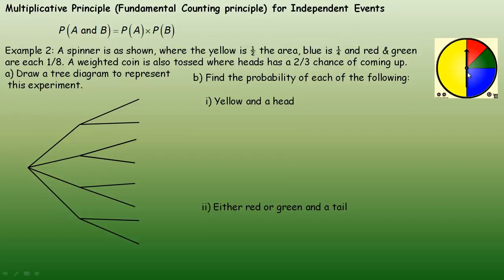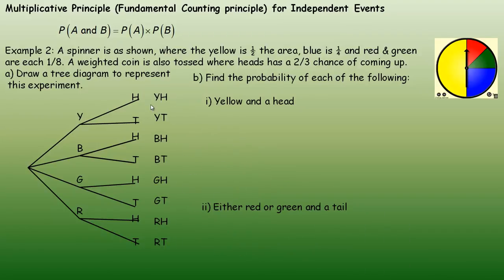We're doing the spinner first and the coin second, though we could do it either way. Since the spinner has four different colors, there are four branches coming out — yellow, blue, green, and red. Then for the weighted coin, each branch splits into a head or a tail. We list the whole sample space: yellow and head, yellow and tail, blue and head, and so on.